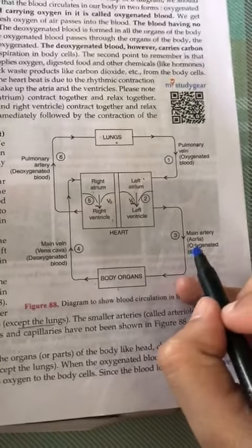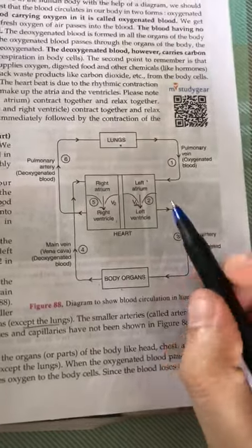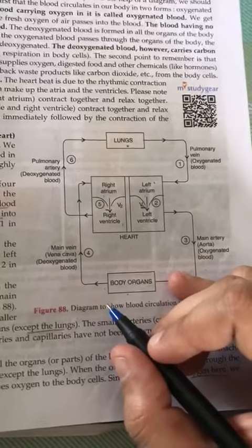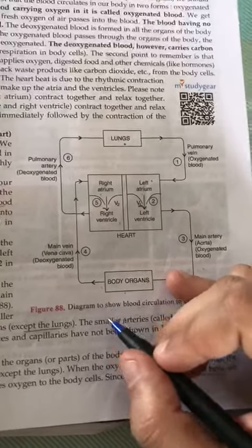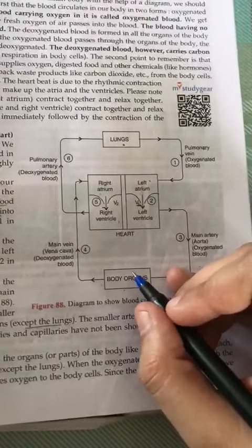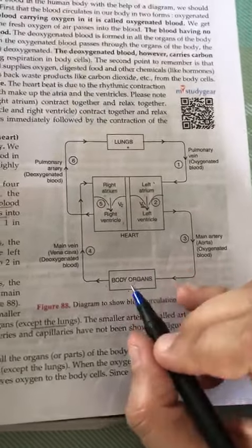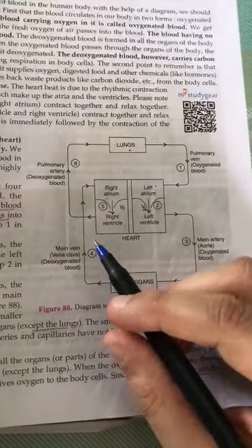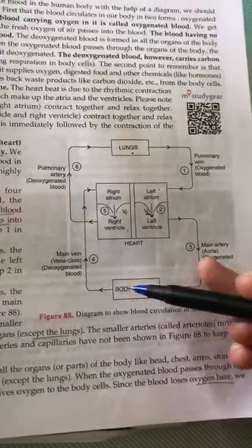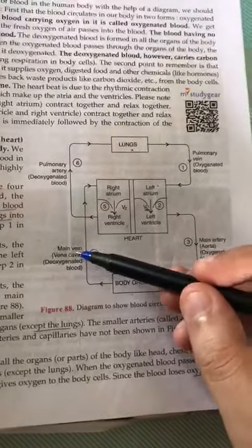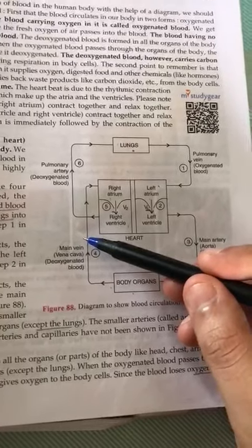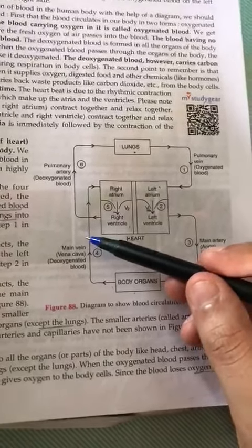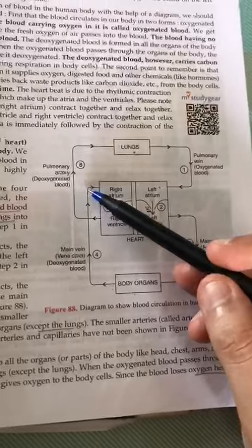Here there is an exchange of gases. Oxygenated blood jo hota hai wo body organs le lete hain, aur jo carbon dioxide hoti hai wo blood le lete hain. So now it is deoxygenated blood, because we have given all the oxygen there. We have the vena cava — so from there the deoxygenated blood will enter.